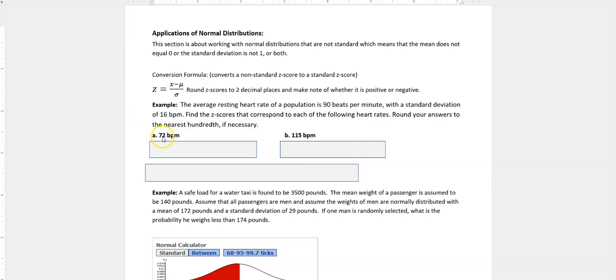So for 72, that's our x in this example. I would take 72 and subtract 90 and divide by the standard deviation of 16, and I get negative 1.125, but rounding to the hundredths, I get negative 1.13. To get the z-score for 115, take 115 minus 90 divided by 16, and then round that to two places and you get 1.56.